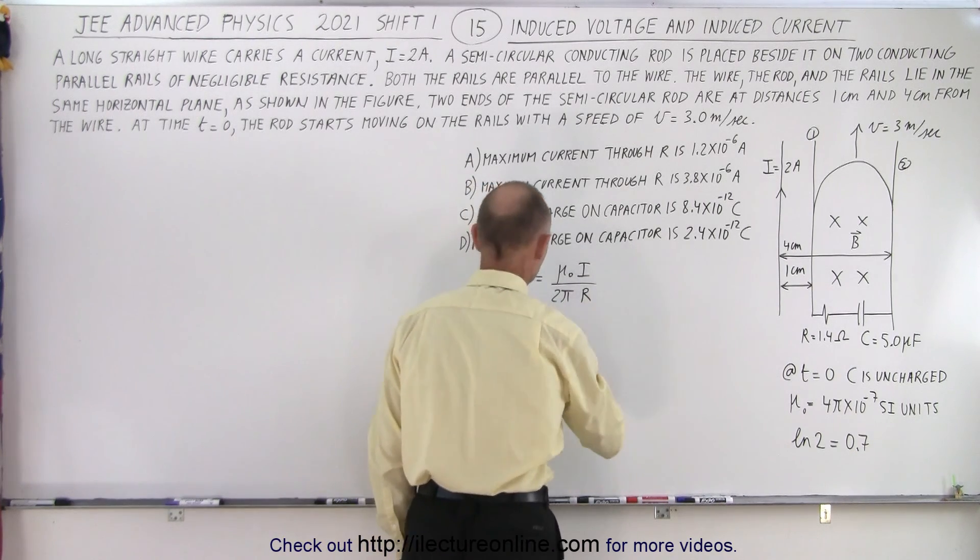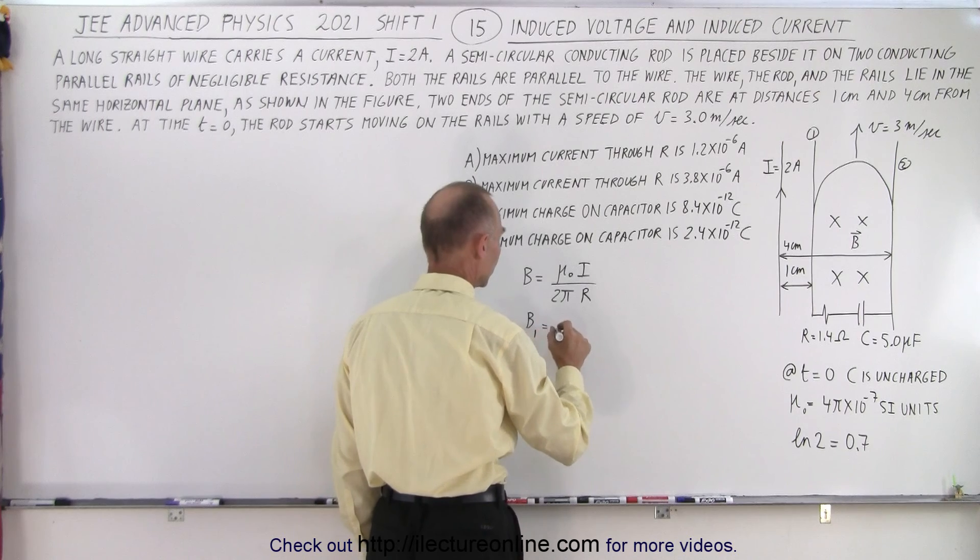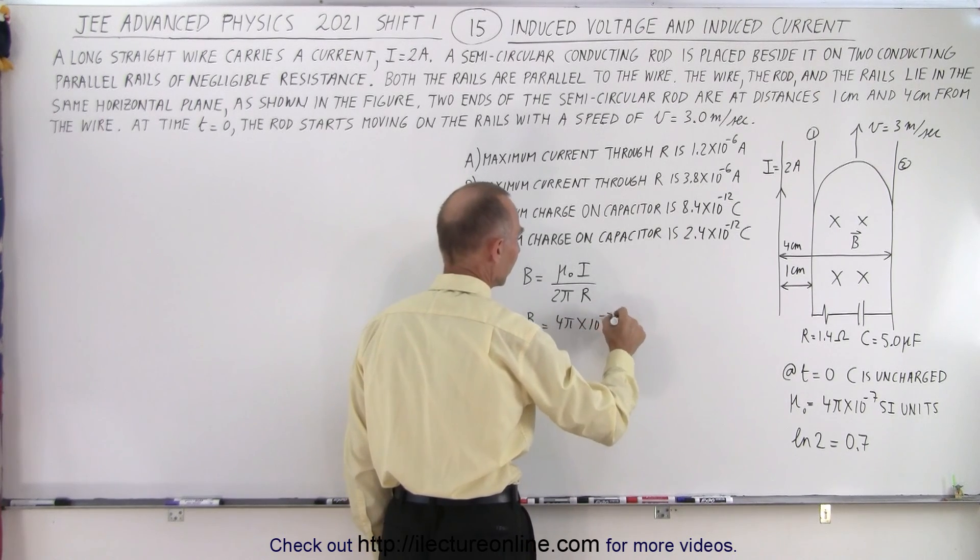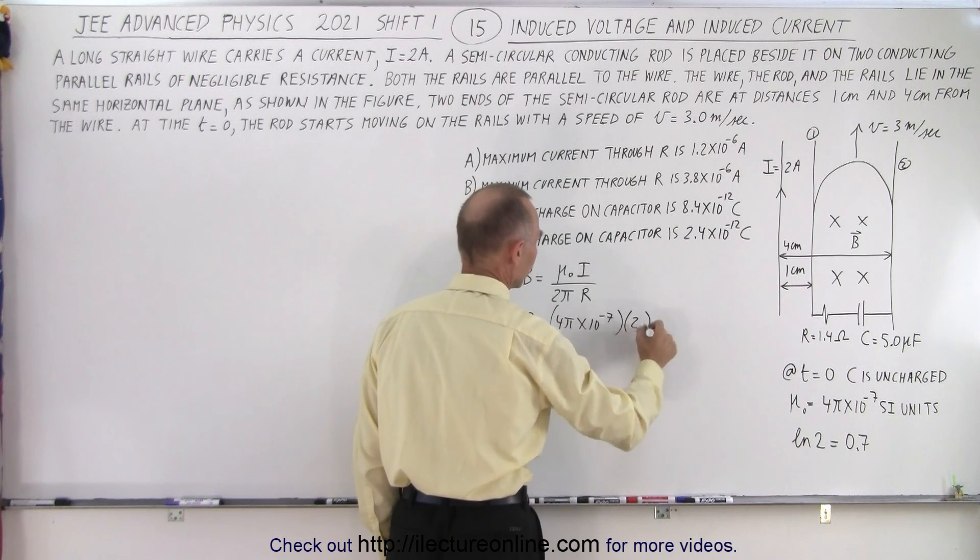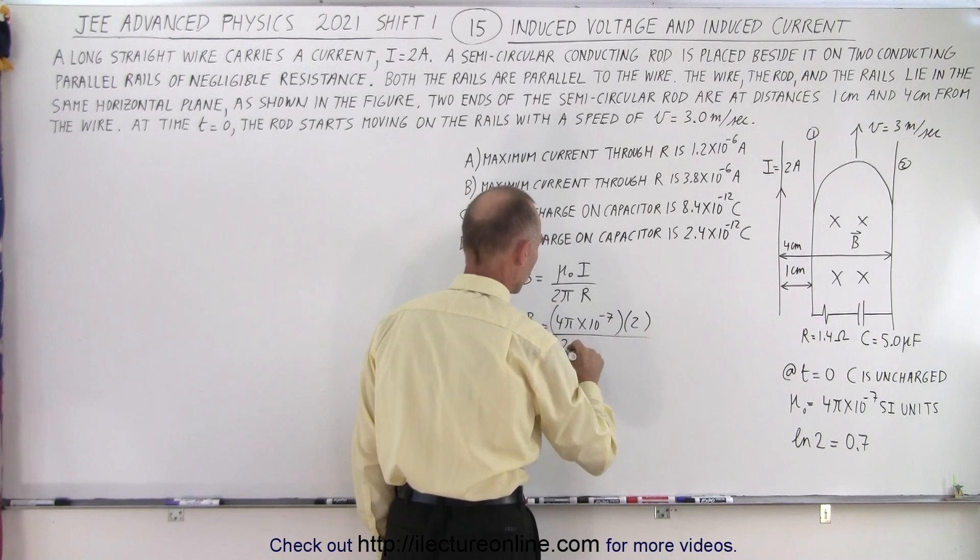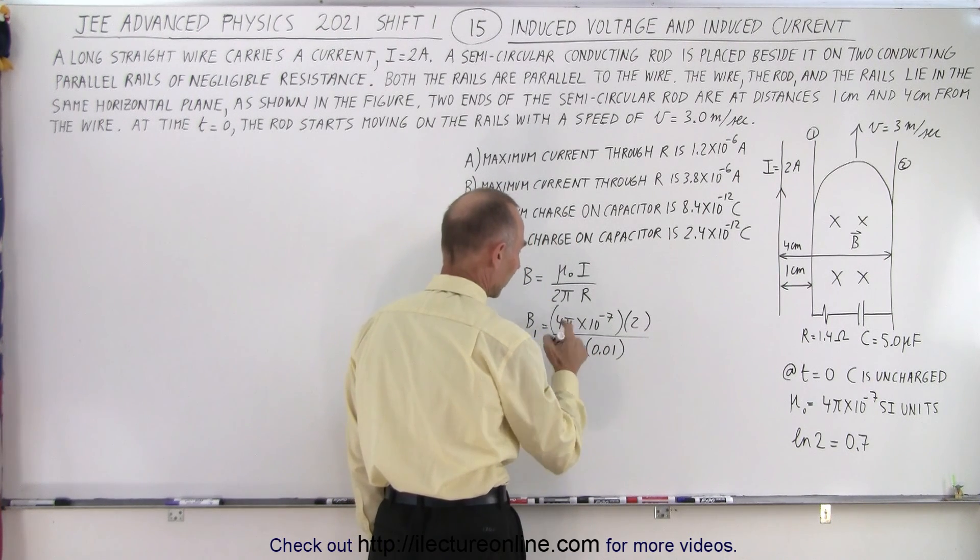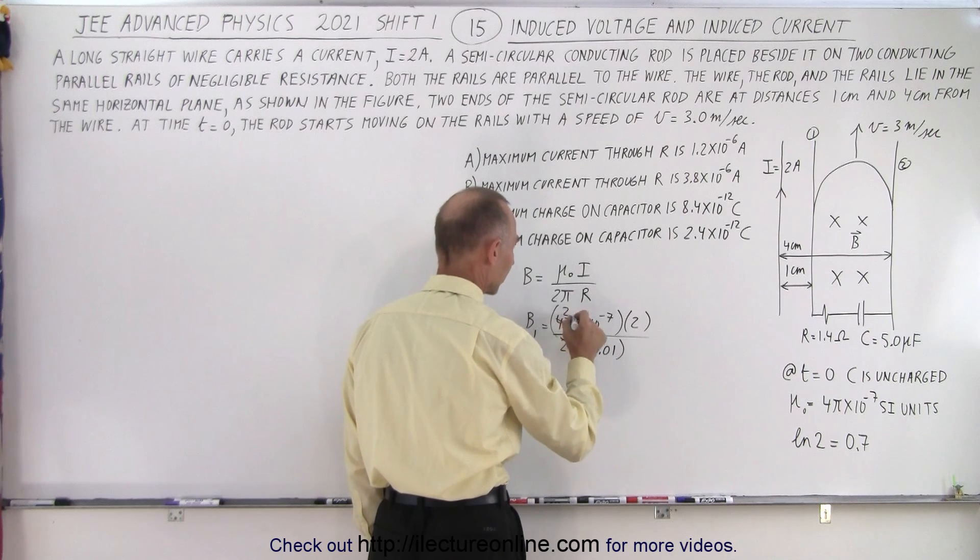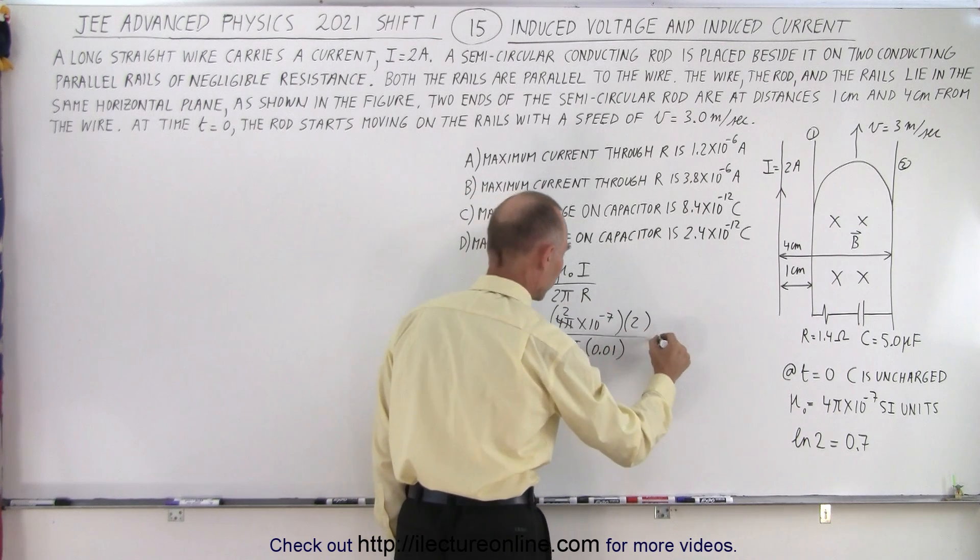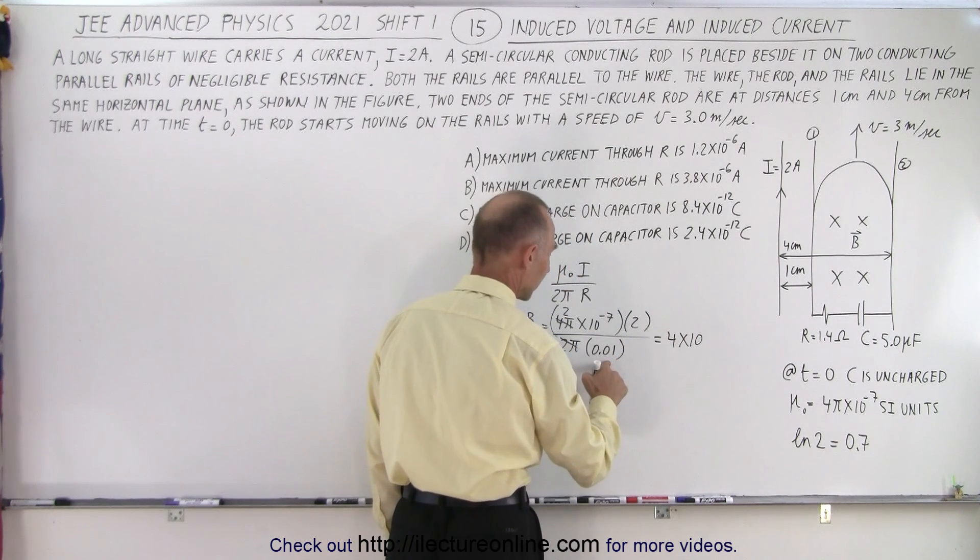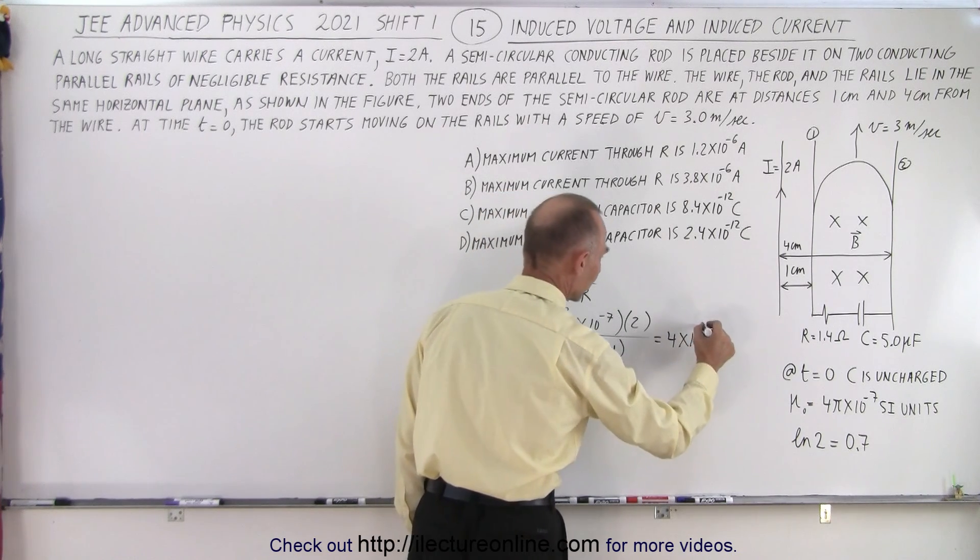So what we're going to do is calculate the magnetic field at point one and the magnetic field at point two on the left rail and the right rail. For B1 that would be equal to 4 pi times 10 to the minus 7 times the current of 2 amps divided by 2 pi times the distance of 0.01 meters. So that's 2 pi, 4 pi that becomes 2, 2 times 2 is 4, so this gives me 4 times 10 to the divided by 0.01 that gives me 10 to the minus 5.